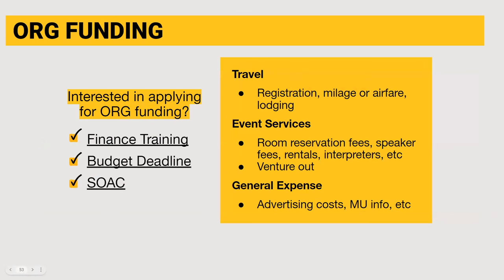The Organization Resource Group provides funding to recognized student organizations through the student activity fee. In order to be considered for this funding, RSOs must attend an ORG finance training and submit a budget request by the designated deadline. More information about finance training dates and times can be found on the ORG MU Engage page. The Student Organization Allocation Committee reviews and approves the budget requests submitted. ORG funds can cover three categories: travel, event services, and general expense. For more information about funding, please attend a finance training.